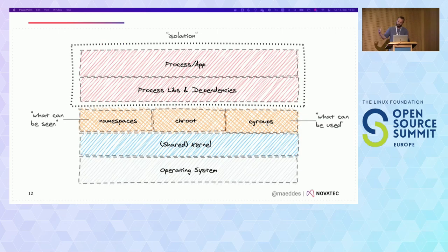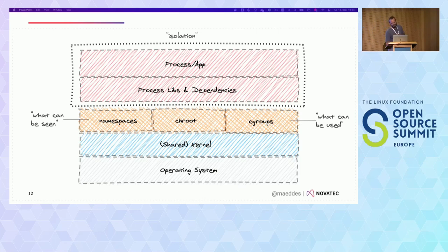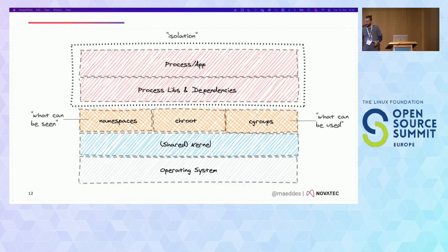The initial idea of a container was to separate the application along with its libraries and dependencies from the underlying shared operating system, and make it portable and executable in various environments. The idea of containers evolved from technologies like namespaces, chroot, and cgroups. I'm not sure who was in the very first talk today by Gerold — I was there too, that was really good. That's also where I learned a few more things about namespaces.